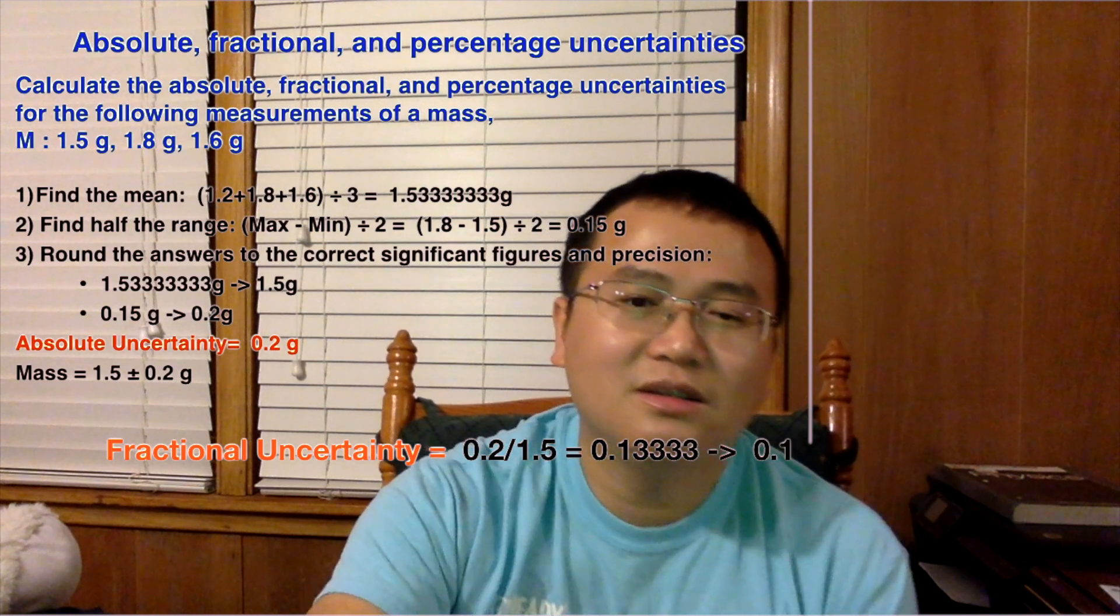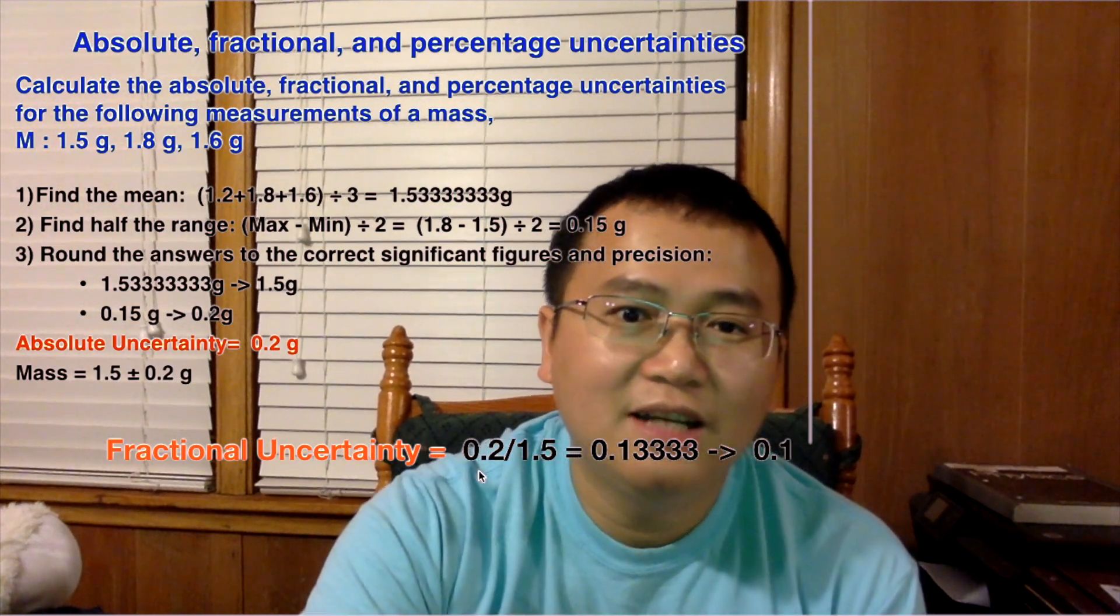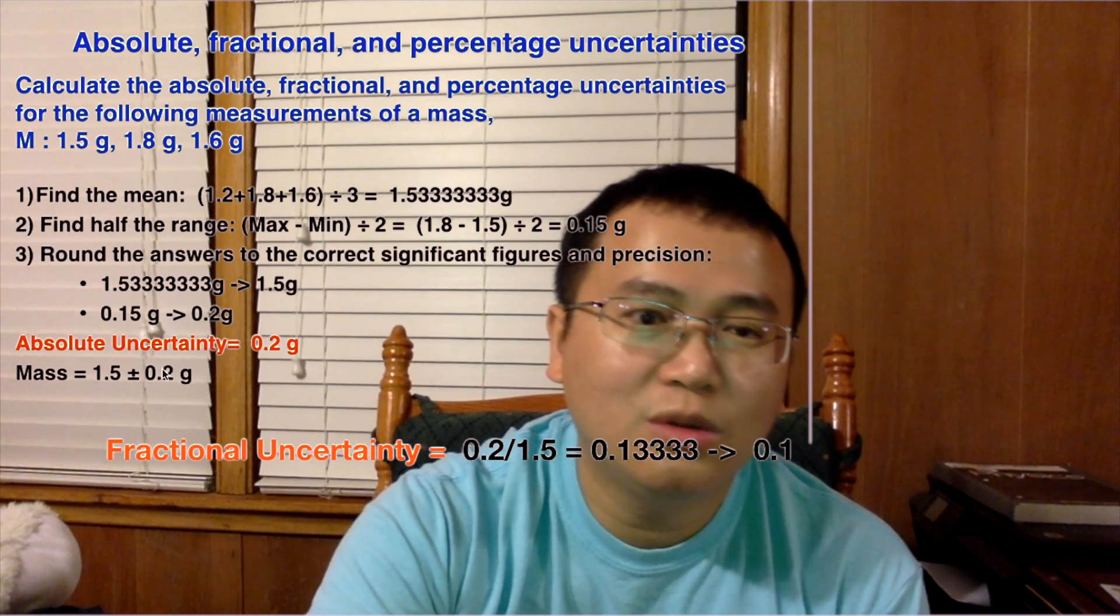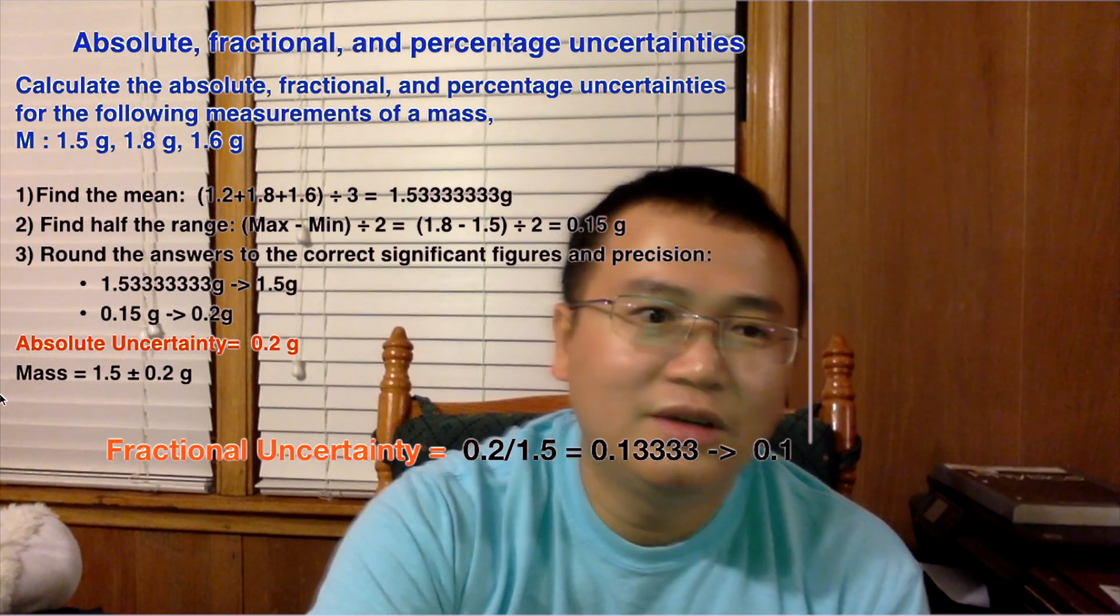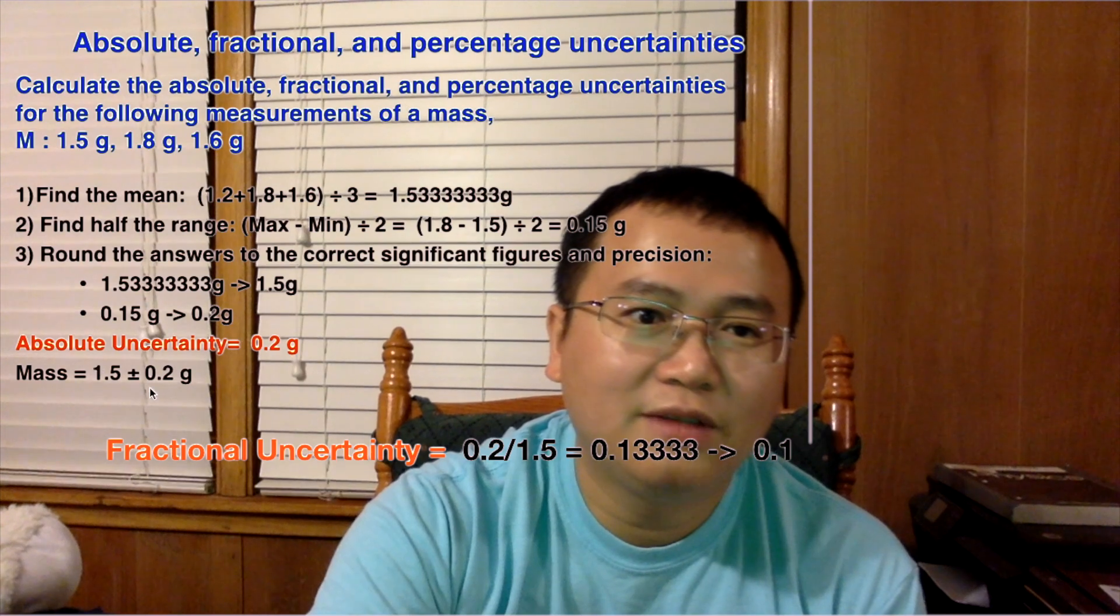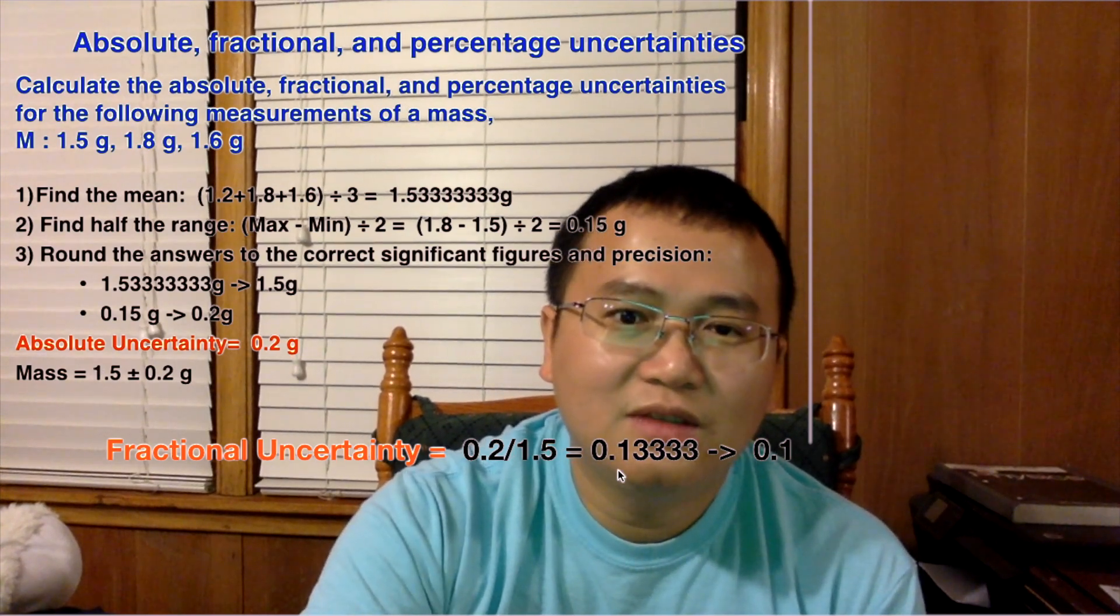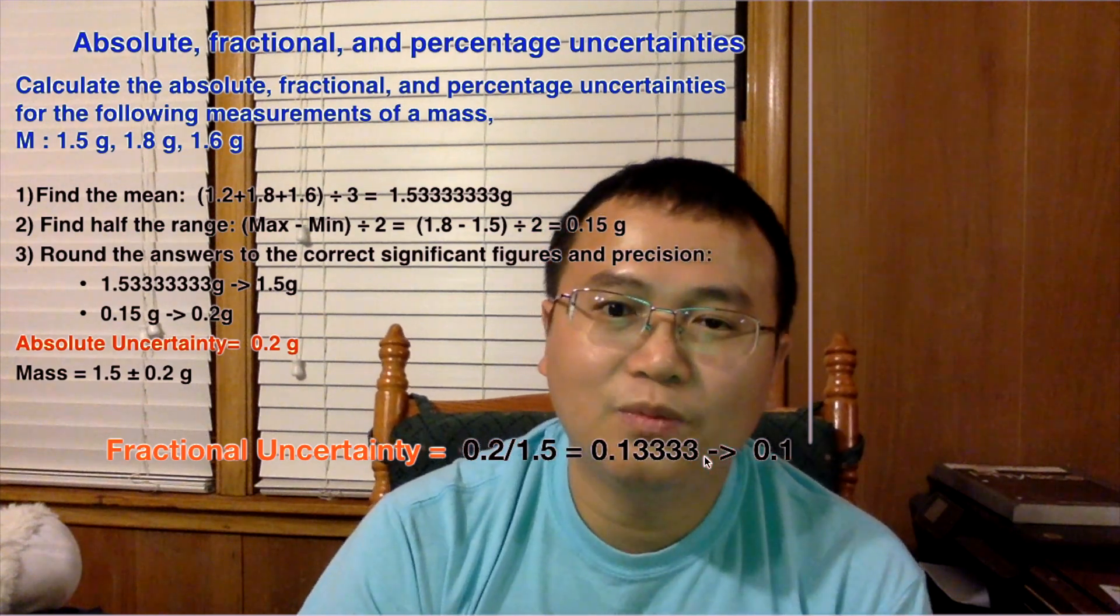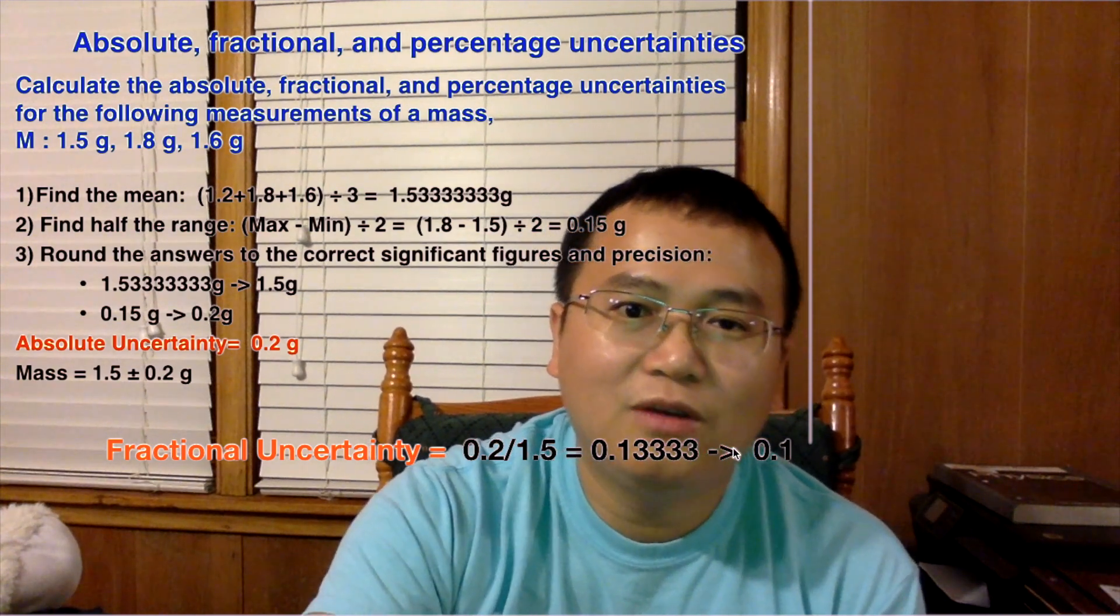So fractional uncertainty is, like the name implies, a fraction. You take the uncertainty, which is 0.2, divided by the mean right here, which is 1.5. So when you do that, you get 0.13333, and the calculator gives you a lot of numbers, so you have to really determine how far you go.